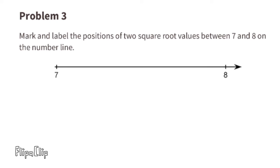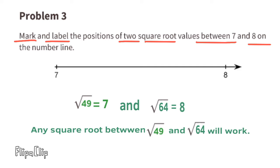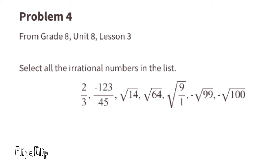Problem 3: Mark and label the positions of two square root values between 7 and 8 on the number line. 7 times 7 is 49 and 8 times 8 is 64, so a square root value that could fit on this number line has to be between the square root of 49 and the square root of 64. It could be any square root between those — for example, the square root of 52 and the square root of 60 would both work.